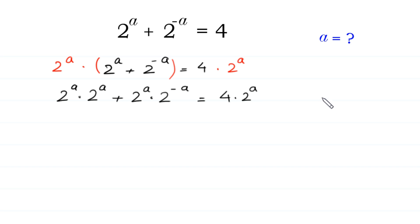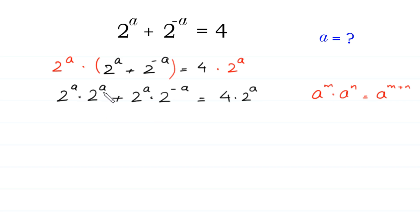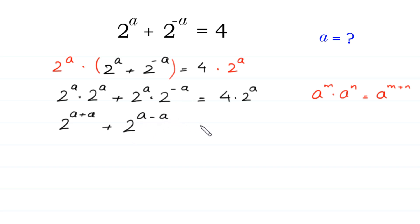According to the property of exponents, a to the power m times a to the power n equals a to the power m plus n. So 2^a times 2^a equals 2 to the power (a plus a), and 2^a times 2^(-a) equals 2 to the power (a minus a), giving us 4 times 2 to the power a on the right.